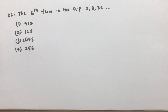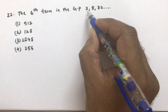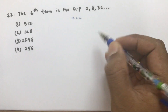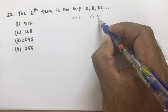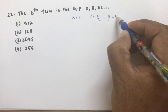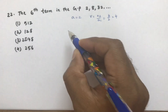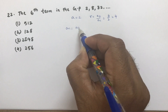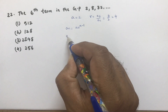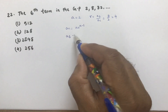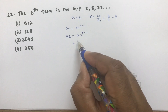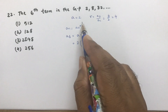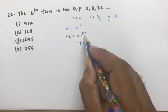Find the sixth term in the GP: 2, 8, 32, and so on. The first term a is 2 and the common ratio r equals a2 divided by a1, so 8 by 2, which is 4. The nth term formula is a·r^(n−1), so for the sixth term we need a·r^(6−1).